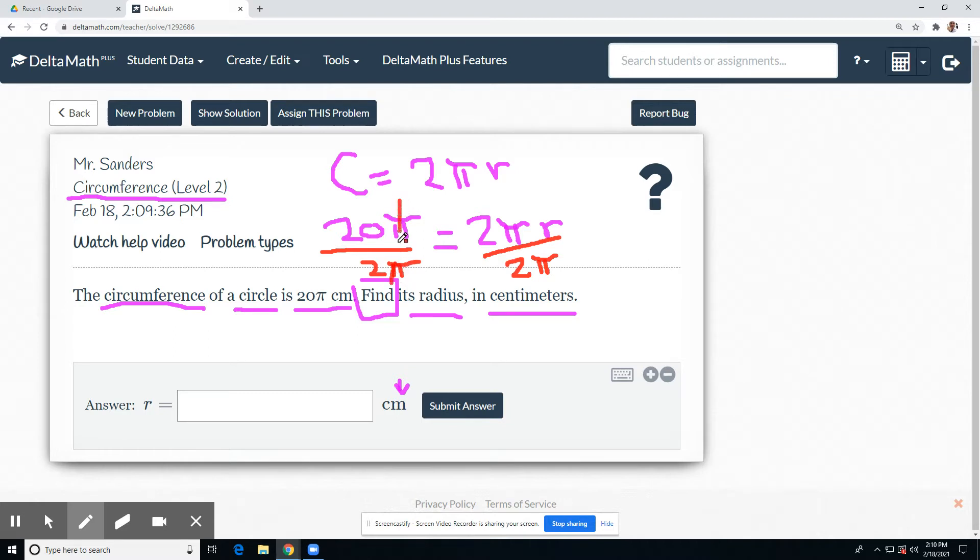2 pi cancels. 2 goes into 20 ten times. 10 equals r. We found the radius.